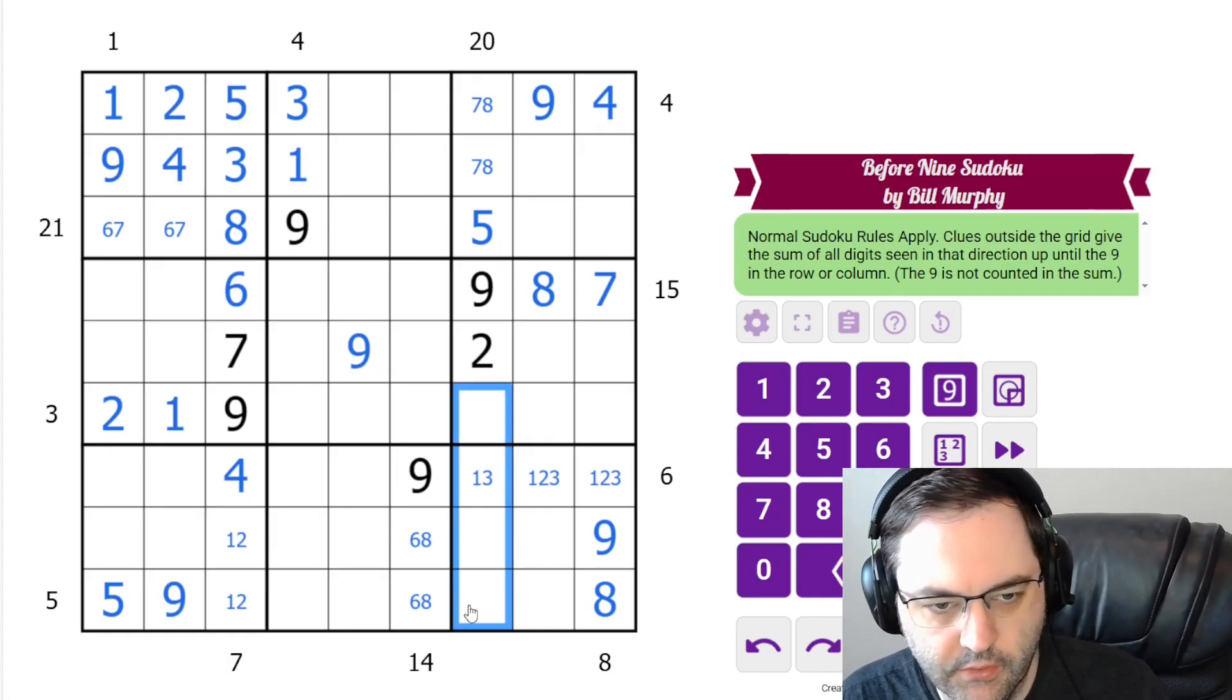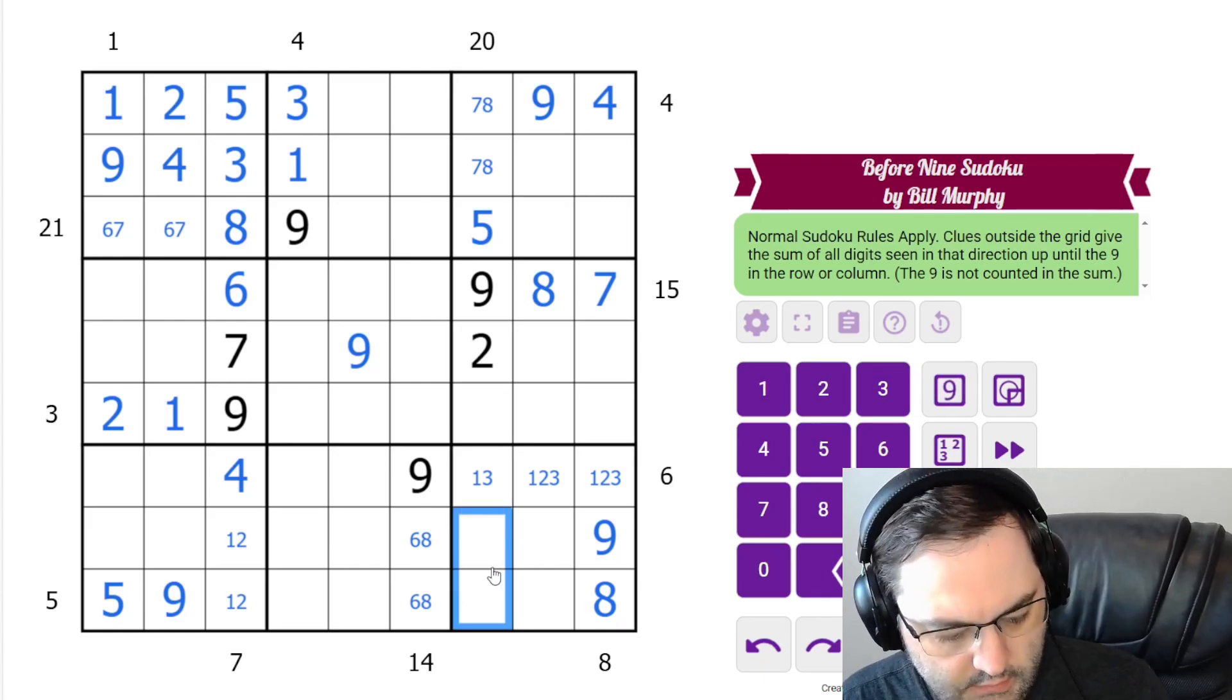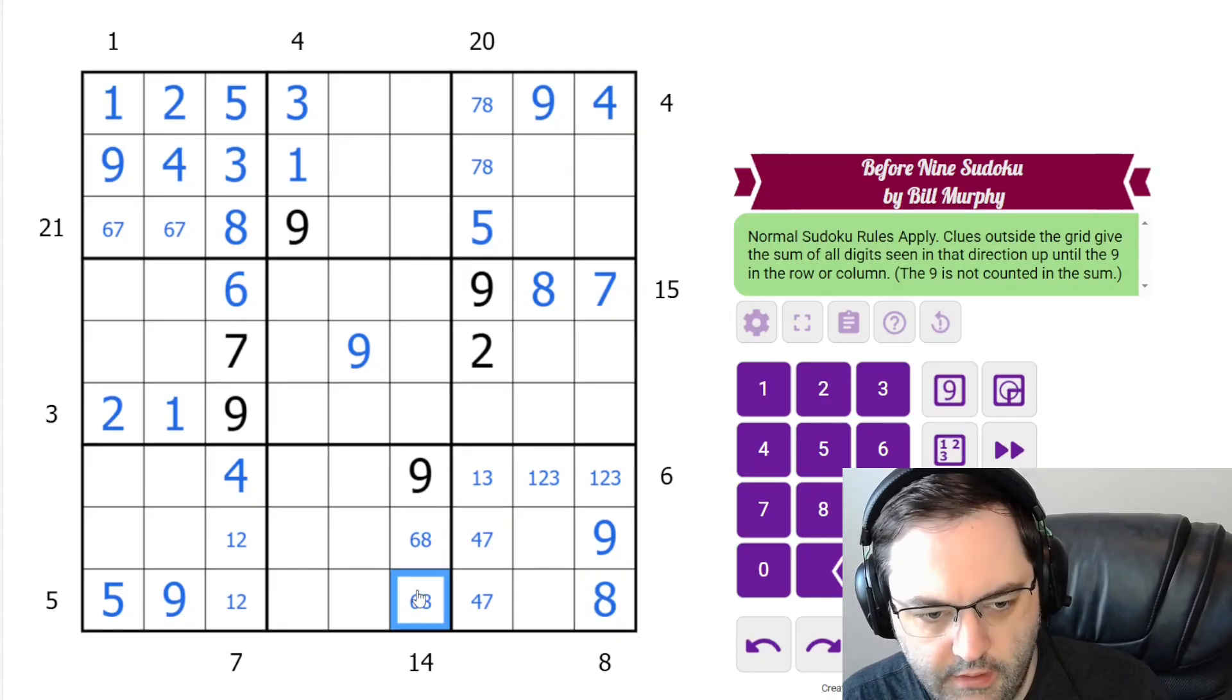I bet we can do something similar here. We need 1, 3, 4, 7. These can't be 1, 3. So it's a 4, 7 pair. Oh, 8 here.